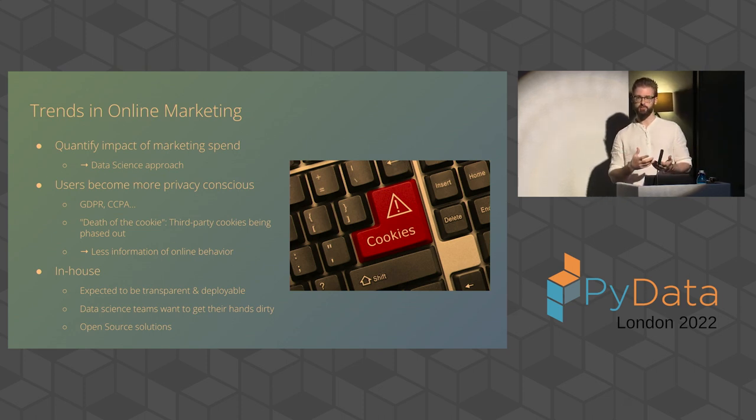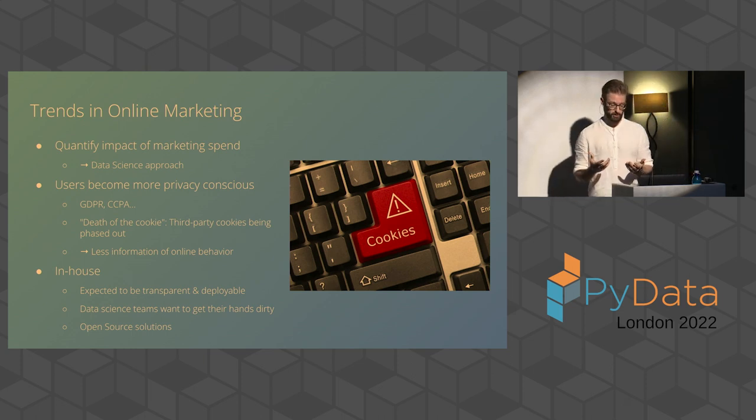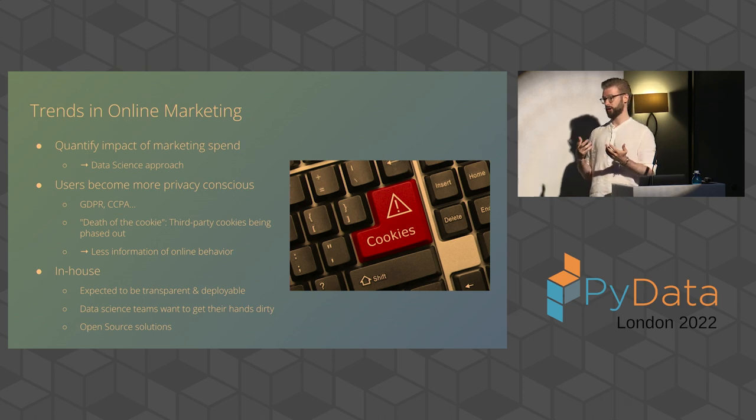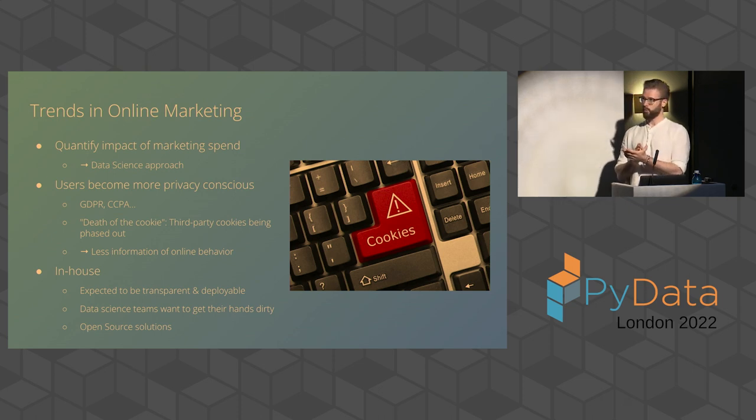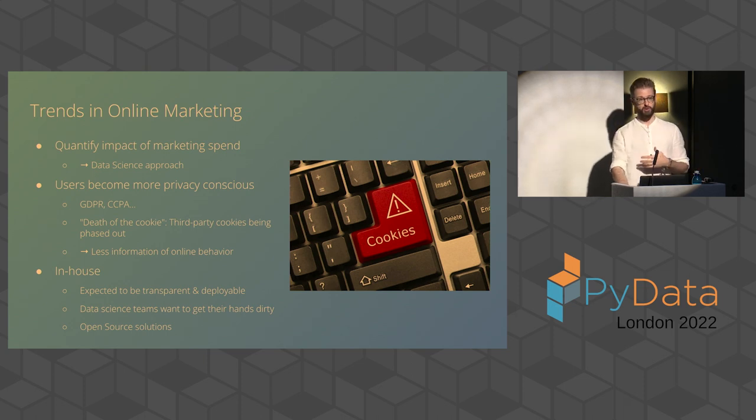So these third party tracking cookies by now are basically going away. It's called the death of the cookies. So it's just very hard to track people online these days, which I guess is a good thing, but hard if you want to track people online and know where your marketing dollars are going. So it makes it very hard for marketers to actually know whether what they're spending on certain platforms is effective or not or how effective it is. And that's the problem that we're going to look at.